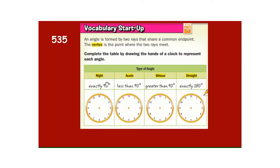A vertex, you need to know what a vertex is. A vertex is the point where two rays meet. On this page, they're asking you to make a time on the clock for a right angle that is exactly 90 degrees, an acute angle that's less than 90, maybe obtuse, greater than 90, and a straight angle that's exactly 180 degrees. So go ahead and do that. Pause the video quick while you make those four angles.